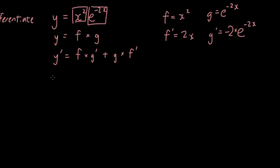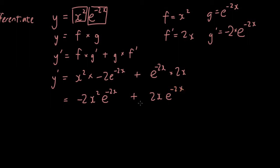So now let's substitute all of those terms into the formula. So I have x squared times negative 2e negative 2x plus g is e to the power of negative 2x times 2x.